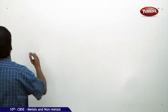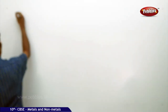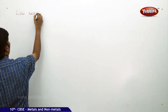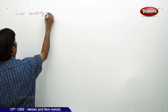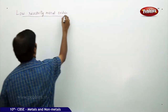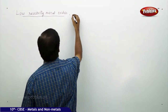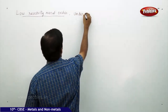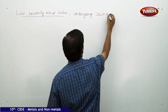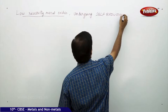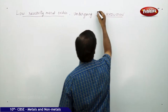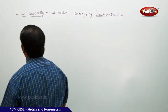The next part of the discussion is metals — specifically, low reactivity metal oxides undergoing self-reduction. For the first example of self-reduction,